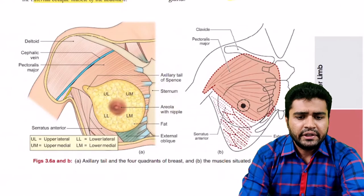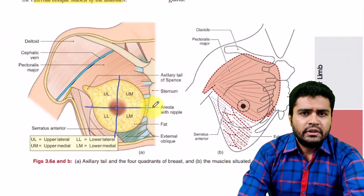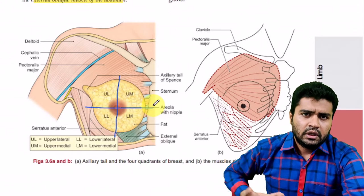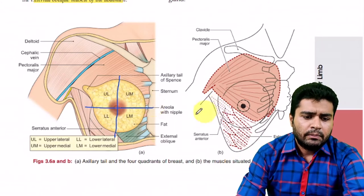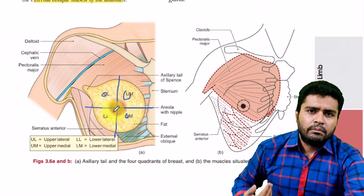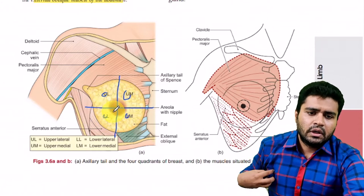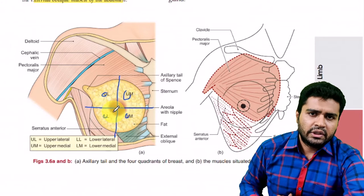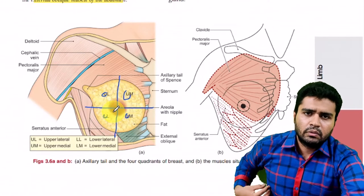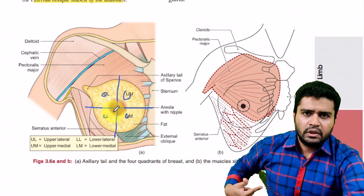The breast has four quadrants. To divide these quadrants, you draw two lines — one vertical and one horizontal. The upper two are the upper quadrants and the two lower ones are the lower quadrants. In the upper region: the medial side is the upper medial quadrant, the outside is the upper outer or upper lateral quadrant. Below: the inner side is the lower medial and the outer side is the lower outer or lower lateral. So: upper medial, upper lateral, lower medial, lower lateral.